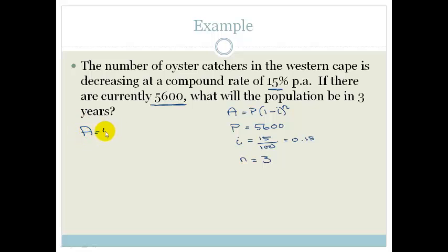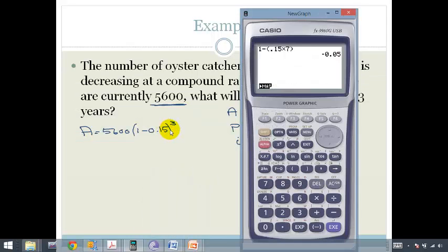So if we substitute, we've got A equals 5,600 times 1 minus 0.15 to the power of 3. So we get our calculator and we clear it and we go 1 minus 0.15 equals and we multiply to the power of 3 and then we times it by 5,600. And we see that we've got 3,439.1 birds.